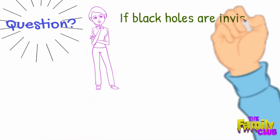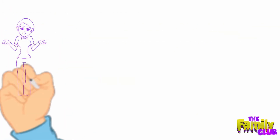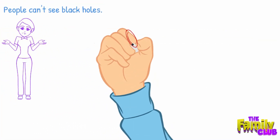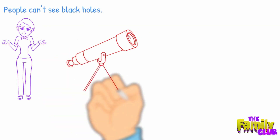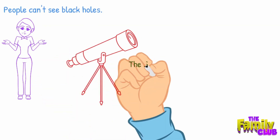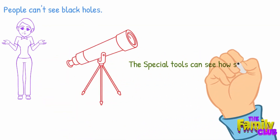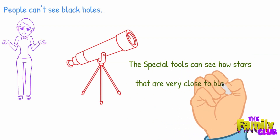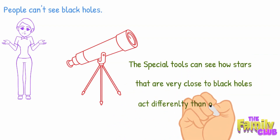If it's invisible, how do we know about it? People can't see black holes — they are invisible. Space telescopes with special tools can help find black holes. These special tools can see how stars that are very close to black holes act differently than other stars.